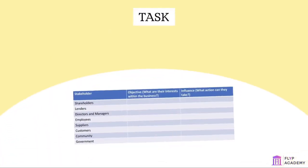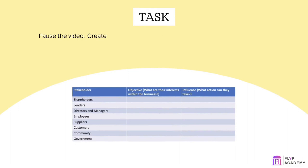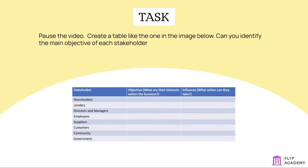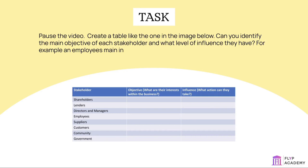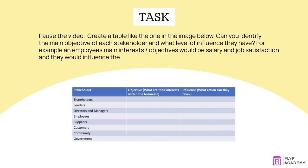Task: Pause the video. Create a table like the one shown in the image. Identify the main objective of each stakeholder and what level of influence they have. For example, an employee's main interests or objectives would be salary and job satisfaction, and they would influence the level of quality and service that the company provides.